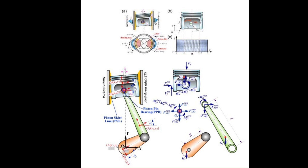Piston Rod Tilt — Side Forces and Friction: In traditional internal combustion engines, the piston rod connects the piston to the crankshaft. As the piston moves up and down, the piston rod doesn't move perfectly straight, but at an angle due to the offset between the crankshaft and the cylinder axis. This tilting of the piston rod causes side forces which press the piston against the cylinder walls.